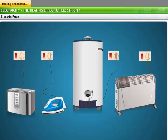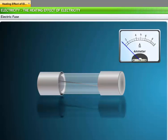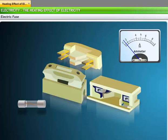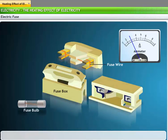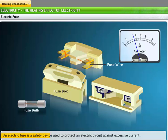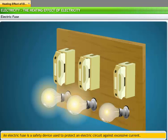If your electrical appliances receive very weak or very strong current, they could be damaged and stop functioning. To prevent such damage from fluctuations in the current, an electric fuse is used in the circuits of most houses these days. An electric fuse is a safety device used to protect an electric circuit against excessive current. The mechanism of the electric fuse is based on the heating effect of electricity.